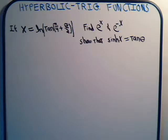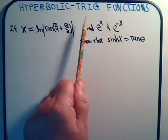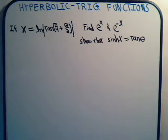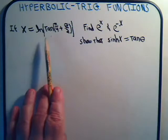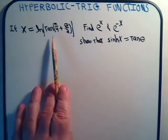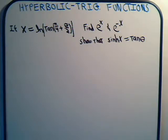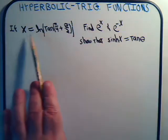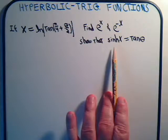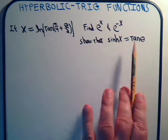We've spent some videos discussing hyperbolic trig function combinations. Here we have a problem where x equals the natural log of the tangent of pi over 4 plus theta over 2. We're supposed to determine what e to the x is and what e to the minus x is, and then show that if this is true, the hyperbolic tangent of x must equal the tangent of theta.